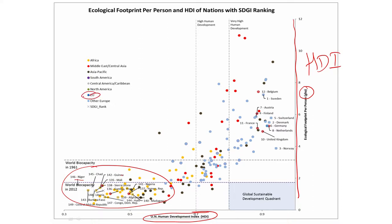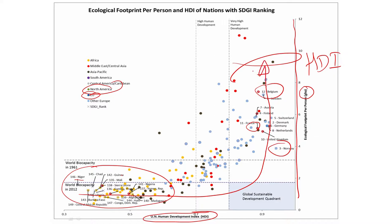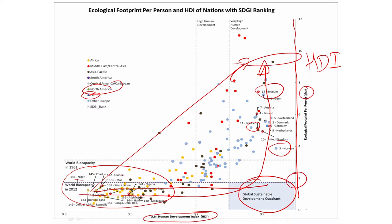The blue colors are European Union; North America is in green. The countries that are developed and rich — from Norway to France to Belgium and Sweden — have a very high Human Development Index, but they also have a very high environmental footprint. So how do you move these countries? Do you have to go to high HDI by increasing the environmental footprint, or is there a way to achieve high HDI while keeping the footprint low? That sustainable development quadrant is where you keep the environmental footprint low and increase the Human Development Index.